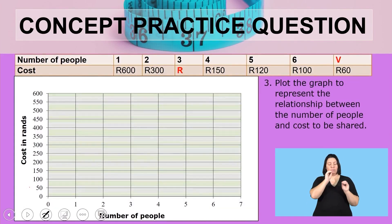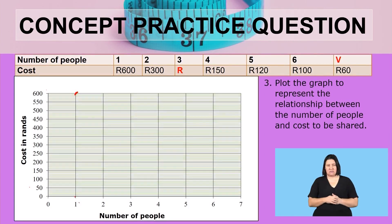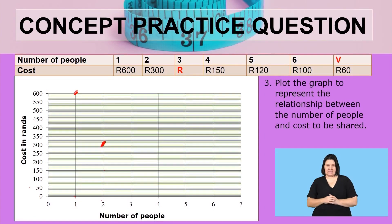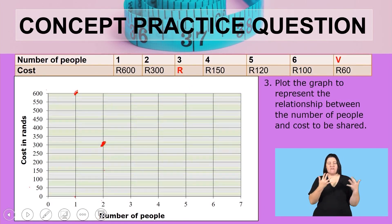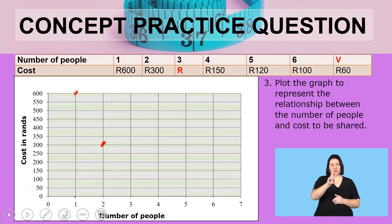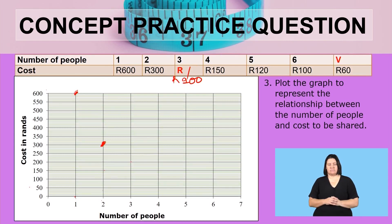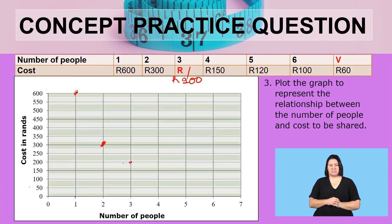Plot the graph to represent the relationship between the number of people and the cost to be shared. For one person, we have 600 rent — that is the point where 600 and one meet. For two people, we have 300 rent. For three people, the value of R is 200 rent, so the point is where three meets 200 rent.